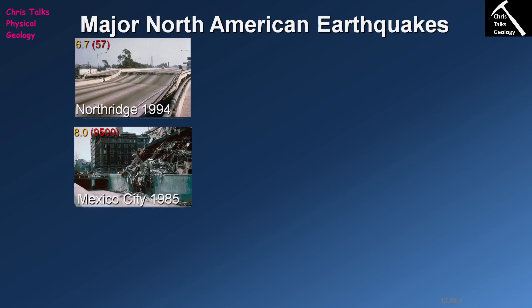Arguably the earthquake with the highest death toll in recent history was the Mexico City earthquake of 1985 — a magnitude 8.0 on the Richter scale, killing about nine and a half thousand people. Mexico City is located on an old lake bed: beneath the city there is a bowl-shaped feature filled with sediment on which the city is built. When the earthquake occurred, this bowl shape caused seismic waves to be reflected around inside it rather than passing straight through, which made the earthquake considerably more damaging than it otherwise might have been.